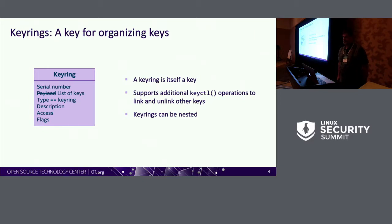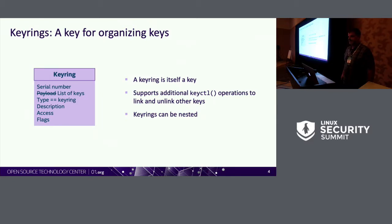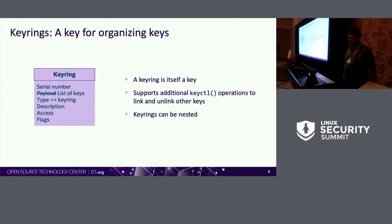One special key type is a key ring, which is a key in every way but instead of a payload, it contains a list of references to other keys. You use this to organize groups of keys for different purposes. This is accessible from user space with the keyctl system call to link and unlink keys, and you can have key rings within key rings.